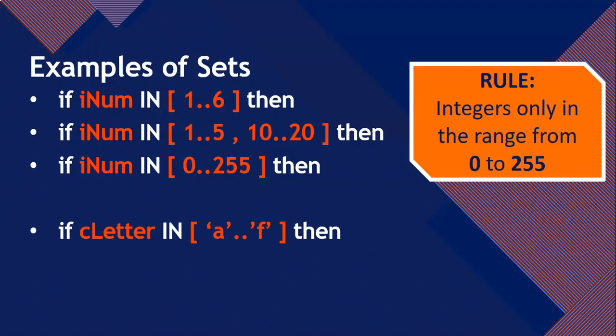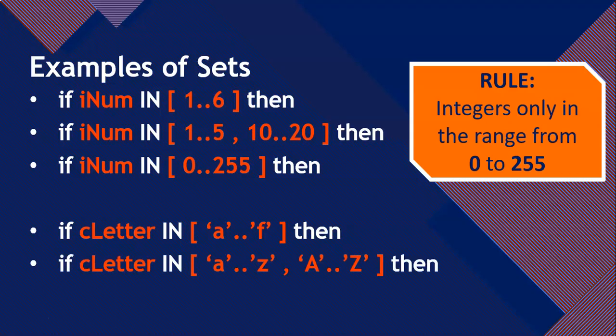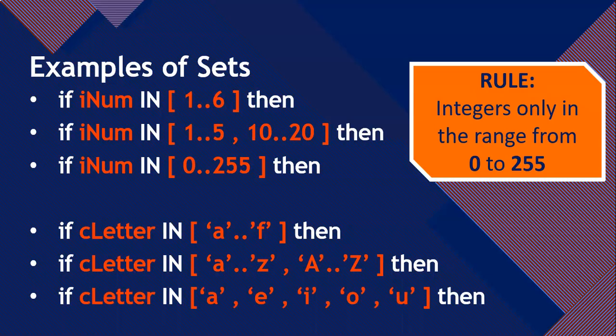Let's look at char options. If cLetter is a character and we want it to be a letter from A to F — A, B, C, D, E, or F — if it's one of those letters, it will be true. But only if they are lowercase letters. If you want uppercase, you need to specify that. So if you want any letter from A to Z in uppercase or lowercase, you'd write: cLetter IN ['a'..'z', 'A'..'Z']. They're treated very differently. What if you want just the vowels? There's no way to write that in order with two dots, so you list them individually with commas: 'a', 'e', 'i', 'o', 'u'. That's much better than writing separate if conditions for each letter.